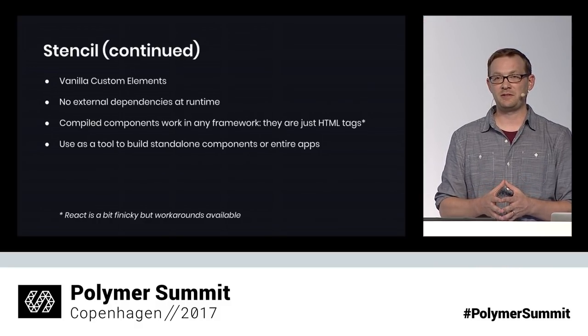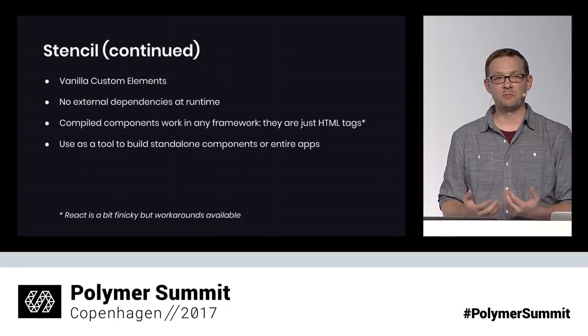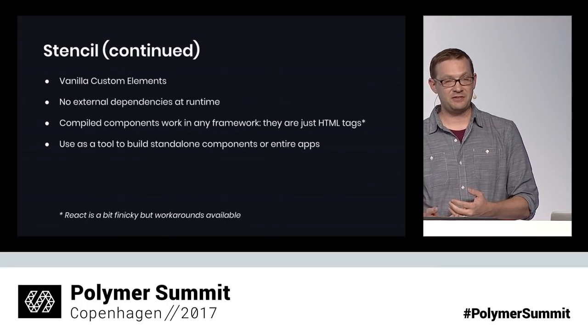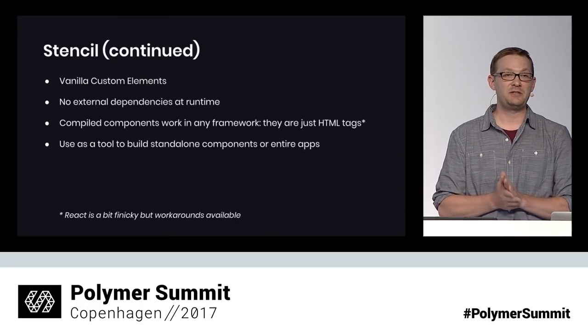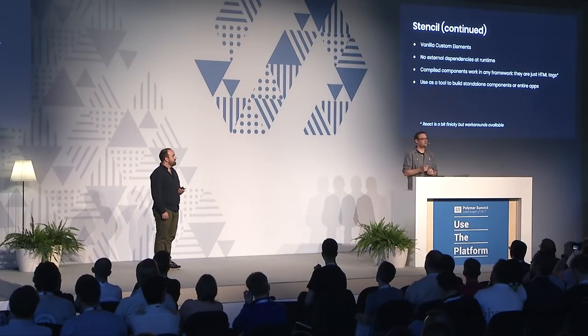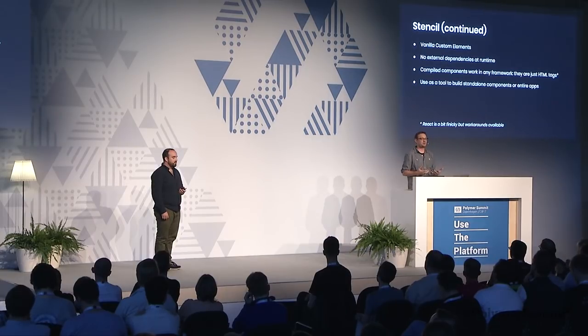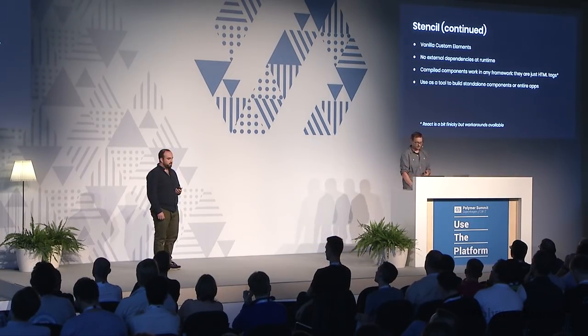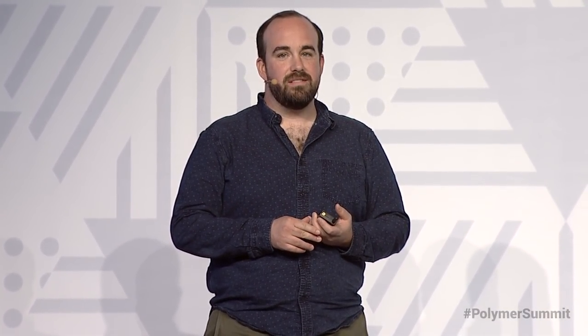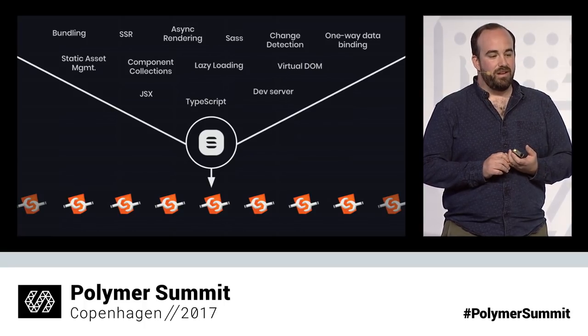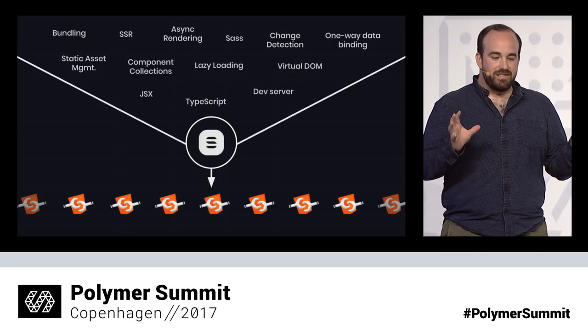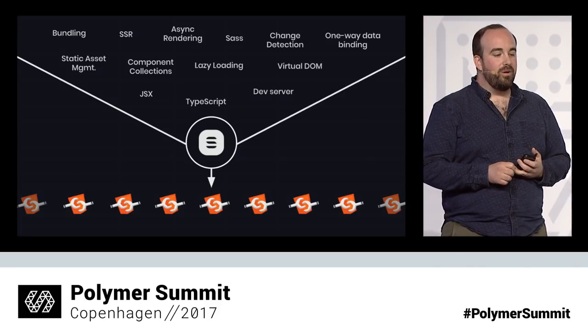Going back to what we originally wanted to do in 2013 — just make it easy for developers to build applications — fast forward to today, there are many frameworks. We feel like Stencil is meeting our original goal, and we're really proud of that. Stencil can be used to create standalone components or entire applications. The way I like to think about Stencil is that it pre-bakes custom elements. It takes concepts we've come to love from frameworks — like virtual DOM, lazy loading, change detection — and builds custom elements with that stuff baked in. It's called Stencil because it's just a tool to help you stamp out components; it gets out of the way at runtime.